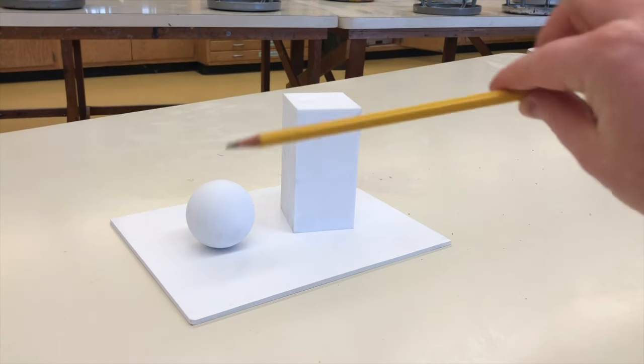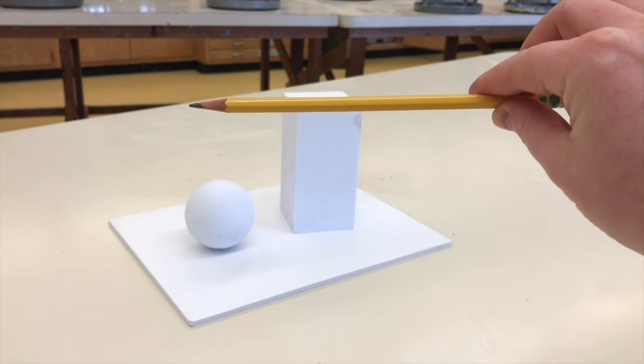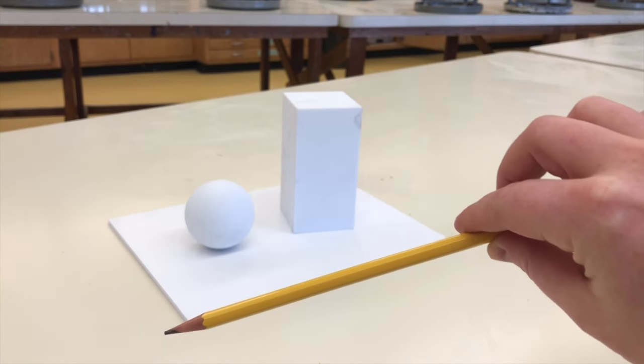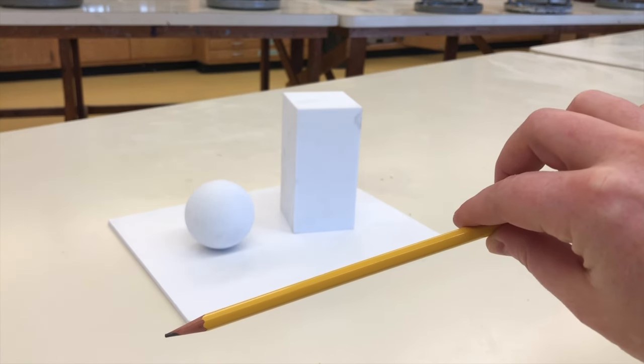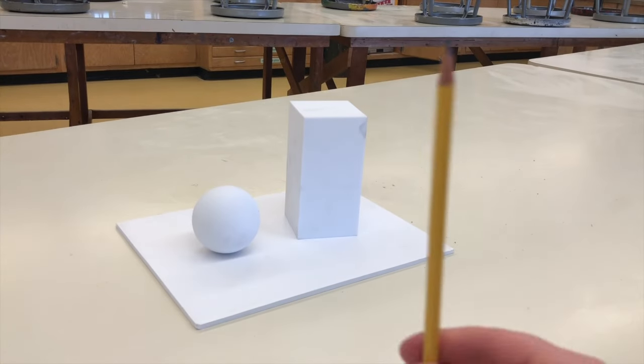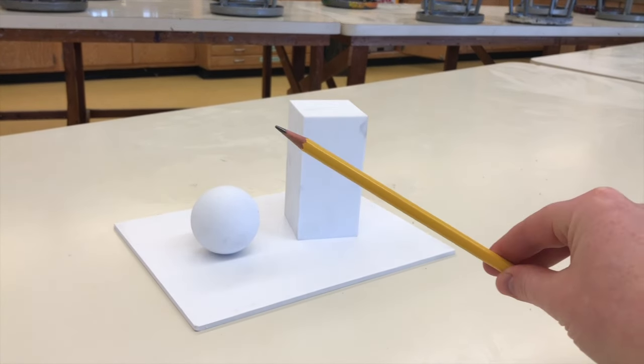Figuring out the right angles of a shape is also incredibly difficult, so that's why I also use my pencil, which is a straight edge. I line up my pencil using the same technique as the measuring technique in order to find the angle, and then from there I gently draw that angle on my paper.